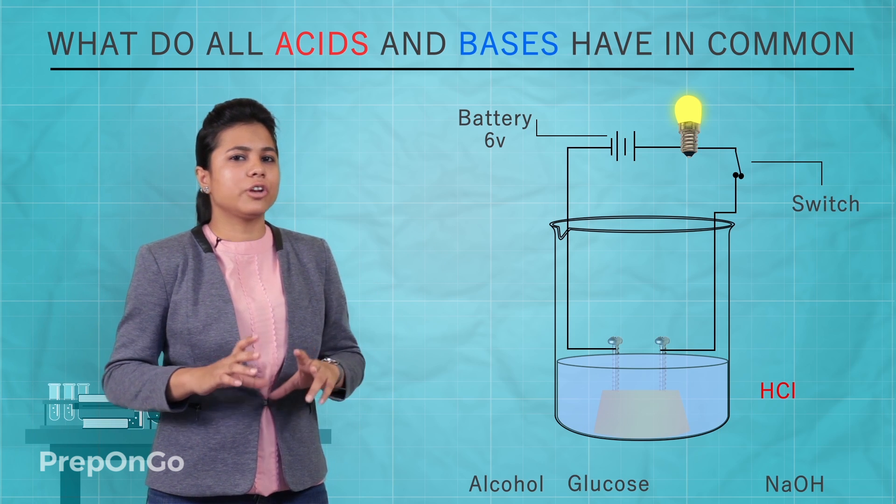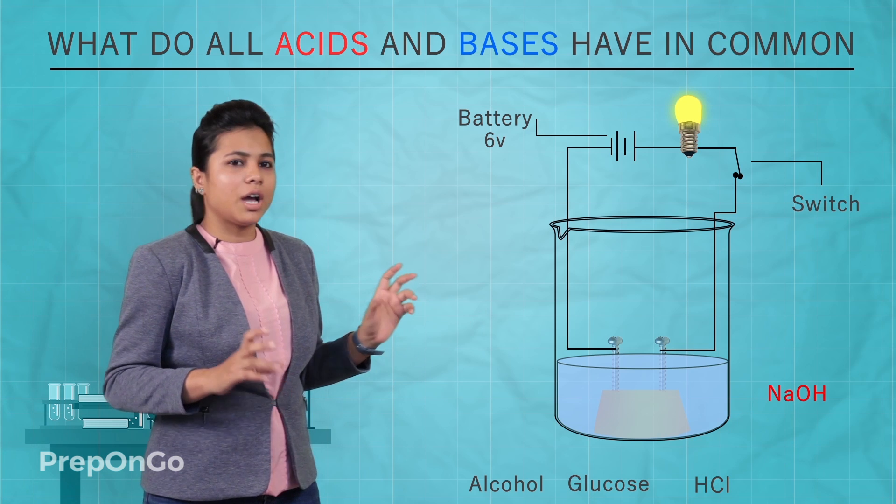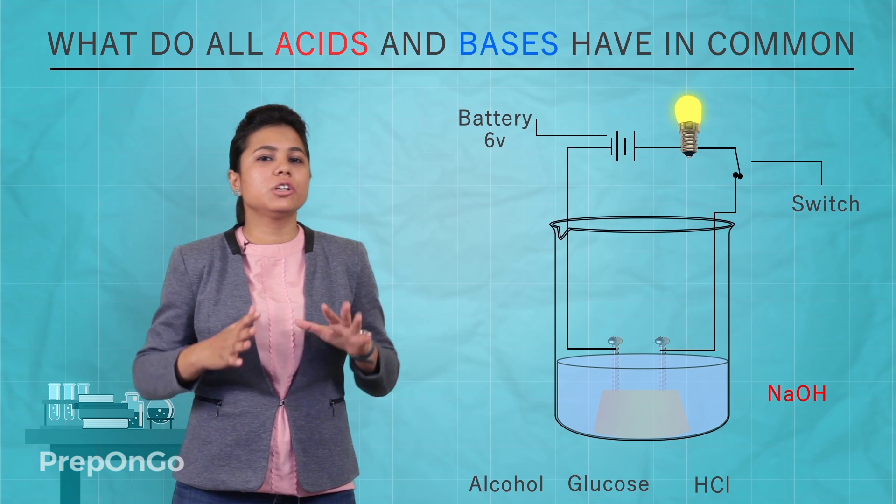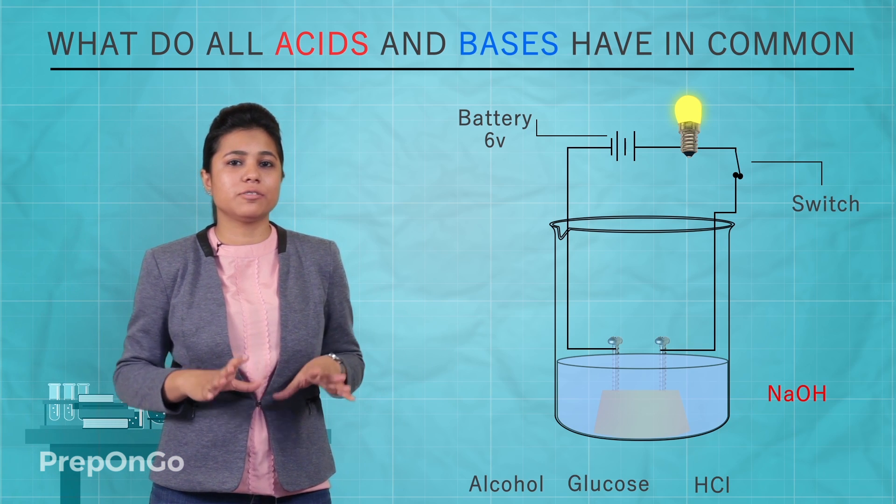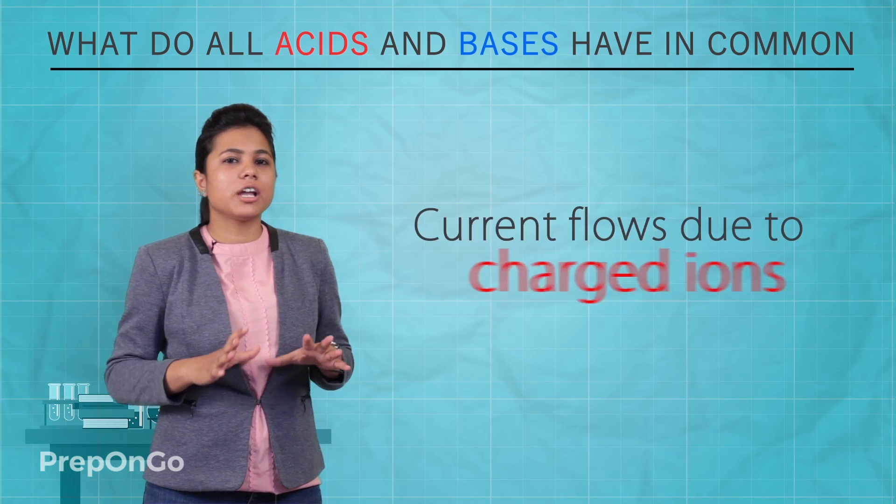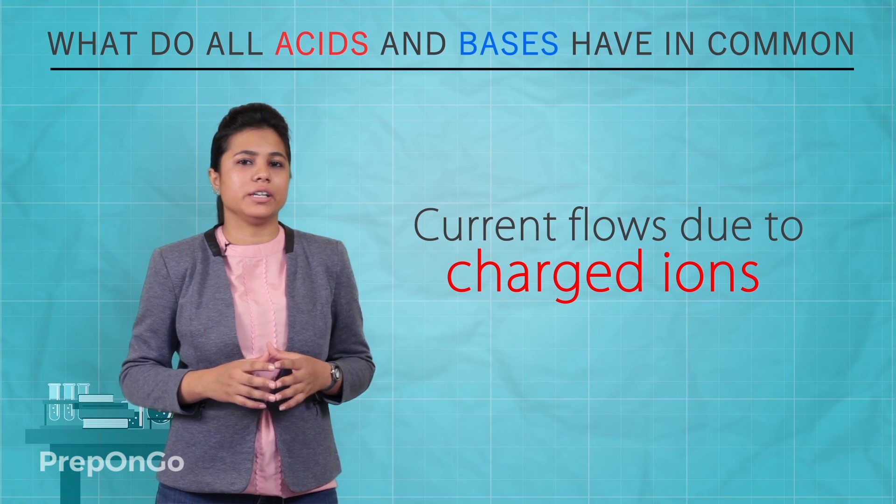Again, try it with sodium hydroxide. Again, the bulb glows. The glowing bulb indicates that there is a flow of current. The current flows due to charged particles or ions.